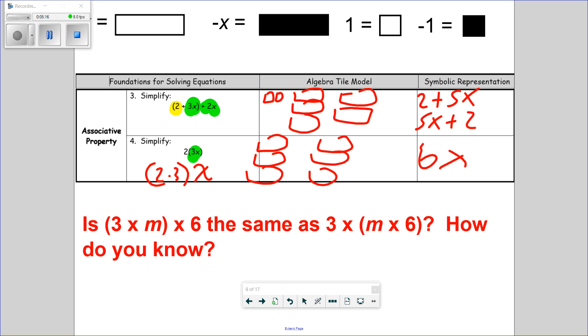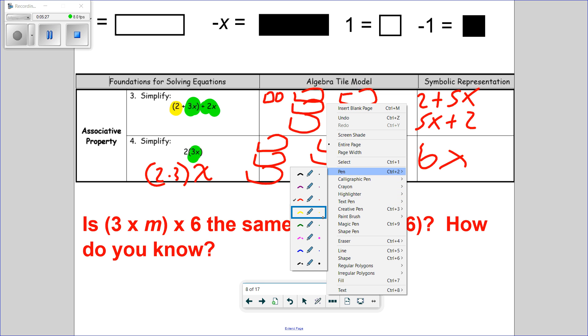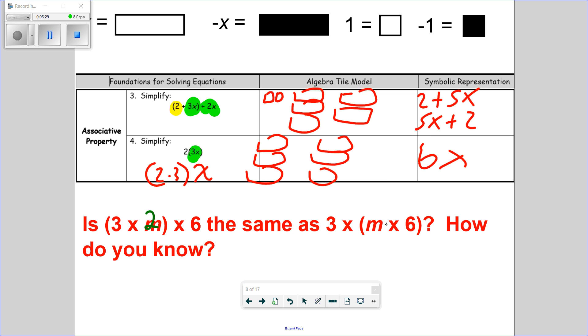So, is 3 times m times 6 the same as saying 3 times m times 6? Let's see. 3 times, I could replace the m with 2. Let me use a different pen color so you can see what I'm doing. 3 times 2 is 6. 6 times 6 is 36. 3 times what's in here? That's 12. 3 times 12 is 36. So, yes, they are the same.